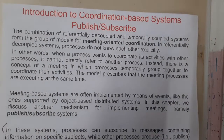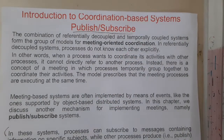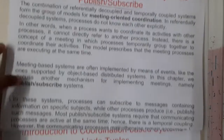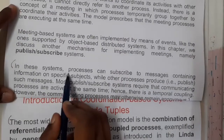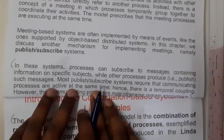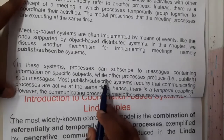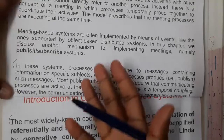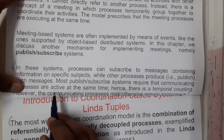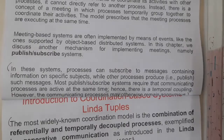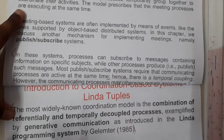Are there any real-time examples for coordination-based systems? Yes — one popular system is the publish-and-subscribe system. The name itself tells you: just like YouTube, you can subscribe and watch whatever is published. Processes can subscribe to messages containing information on a specific subject, while publisher processes publish messages. Most publish-subscribe systems require communicating processes to be active at the same time, hence this is a temporal coupling.